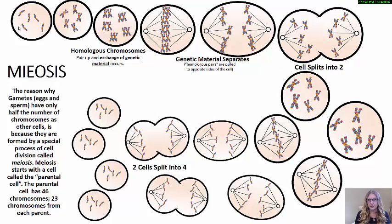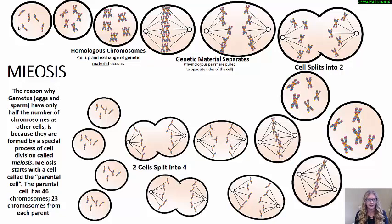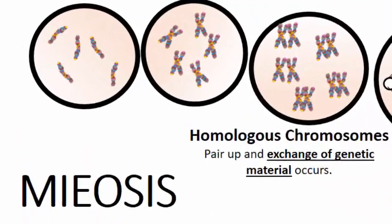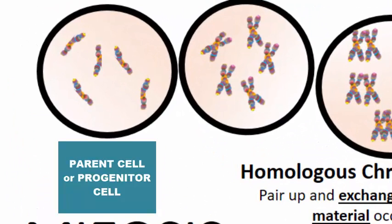Your sex cells or gametes undergo a different process — this process is called meiosis. You can think of it loosely as two consecutive rounds of mitosis. You start off with a normal cell that has 46 chromosomes, 23 from mom and 23 from dad. We call this the parent cell, or sometimes the progenitor cell.